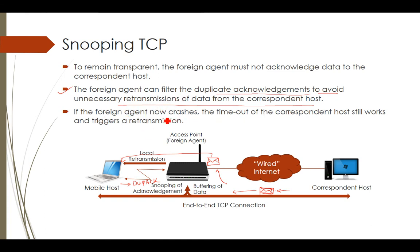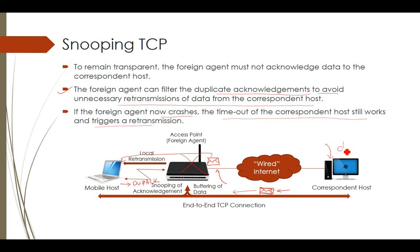If the foreign agent now crashes, unlike in ITCP where the entire communication would be lost, in Snooping TCP the connection still exists. The timeout of the correspondent host still works and triggers a retransmission. If the access point goes dead, the duplicate acknowledgement can still reach the correspondent host via the end-to-end connection, and by seeing that duplicate ACK, the correspondent host sends the message again. So even if the access point crashes, end-to-end delivery remains intact.